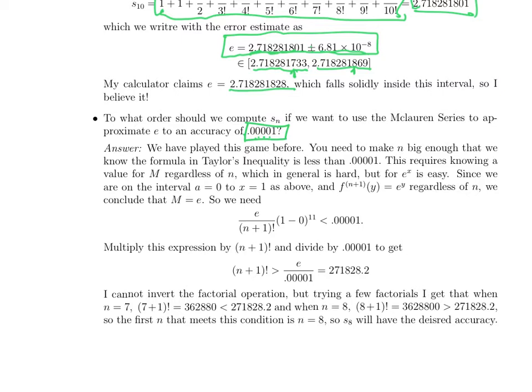So suppose our acceptable error tolerance is 0.00001. And suppose once again we're trying to approximate e. So we need N to be big enough that the error is less than 0.00001, which means since the only control we have over the error is Taylor's inequality, we need N to be big enough that this quantity in Taylor's inequality is less than that. So as before, M is the biggest e to the x gets between 0 and 1, regardless of what little n is. So big M is e. So we get Taylor's inequality gives you e over (n+1) factorial times 1 minus 0 to the 11th. Well, that's just 1. And if you look at this inequality, the only unknown is N. So you can solve for N that makes this true.